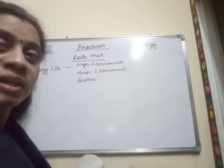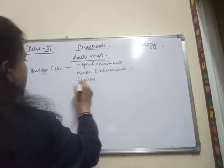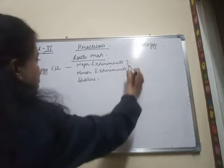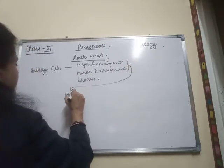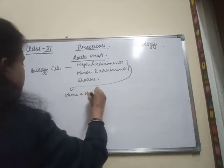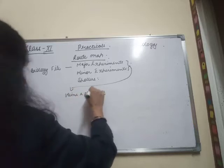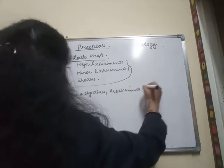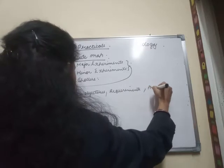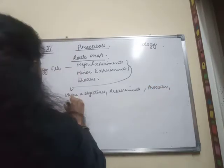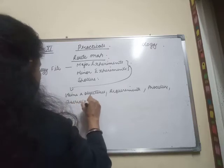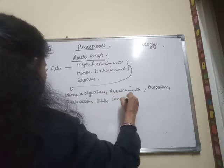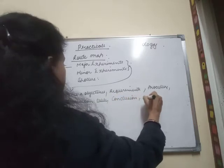Now, for major experiments and minor experiments, the components you need to include are: aims and objectives, requirements, procedure, observation table, conclusion, and precautions.